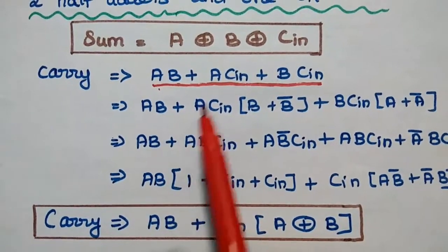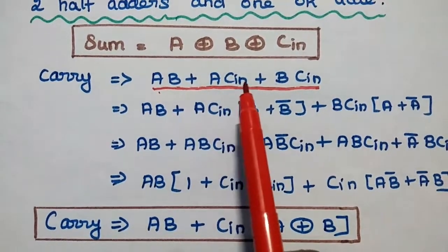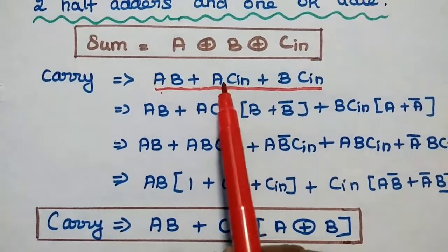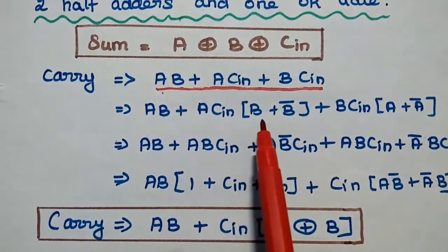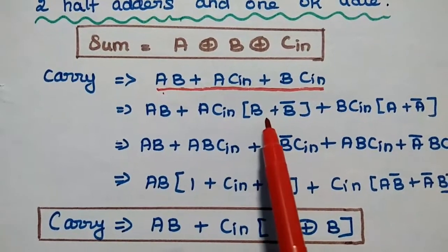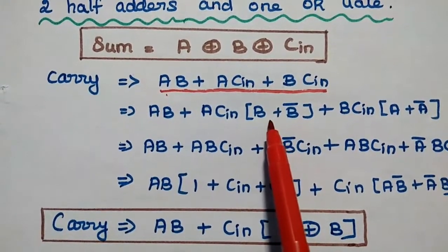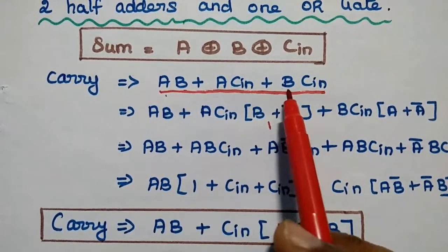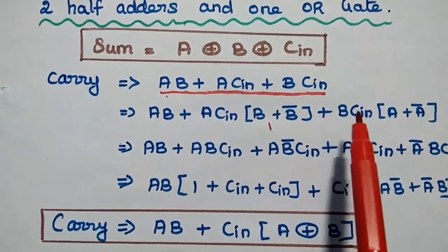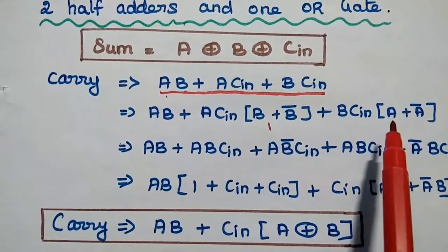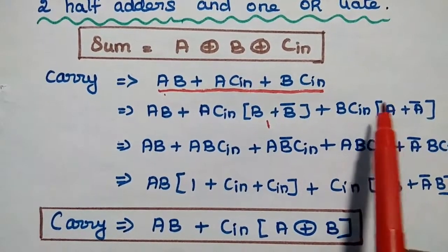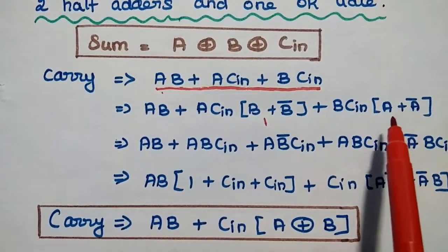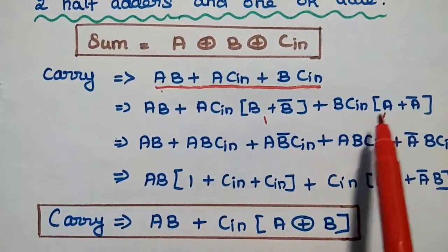So we start with AB + ACin. Which term is missing? B. So we are going to multiply this term with (B + B̄), because we know that B + B̄ is nothing but 1. Then plus BCin — which term is missing? A. So BCin is multiplied with (A + Ā), and A + Ā is nothing but 1.